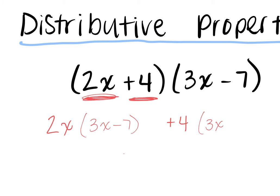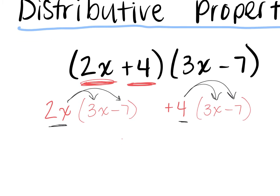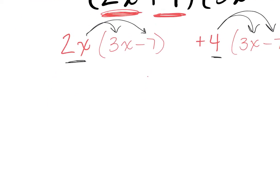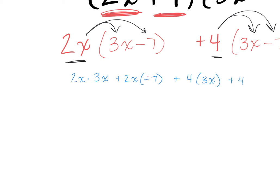And then there's also going to be a 3x minus 7 over here. So we just took that binomial times that binomial and created two situations where all we need to do is distribute. This 2x is going to get distributed to the 3x as well as to the negative 7. This 4 is going to get distributed to the 3x as well as to the negative 7. When we distribute, don't forget we multiply — so this is going to be 2x times 3x, plus 2x times negative 7, plus 4 times 3x, plus 4 times negative 7.